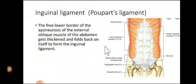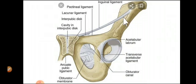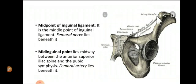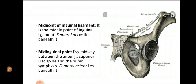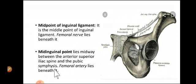This is the inguinal ligament, also called Poupart's ligament — remember this name. In this picture, the ligament extending from the anterior superior iliac spine up to the pubic tubercle is the inguinal ligament. Now there are two things: midpoint of the inguinal ligament and mid inguinal point. The midpoint of the inguinal ligament is simply the midpoint of the inguinal ligament. The mid inguinal point is the midpoint of the line joining the anterior superior iliac spine and the pubic symphysis.